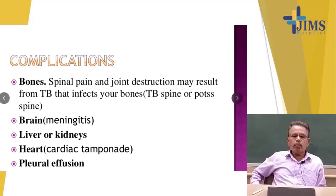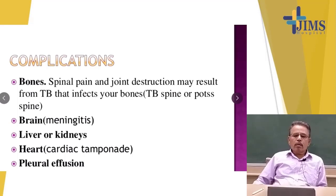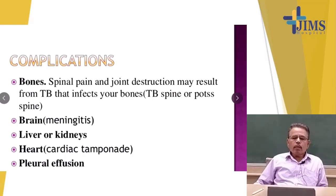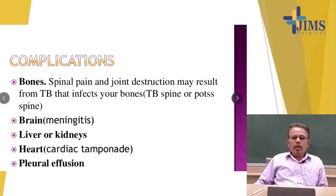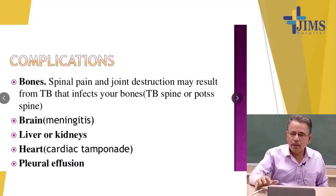Complications of TB: it may affect the bone — spinal tuberculosis (Pott's disease) or other bony tuberculosis; the brain causing meningitis; liver and skin; tuberculosis of the liver and kidney; the heart causing cardiac tamponade; and pleural effusion.